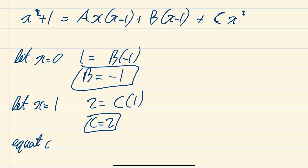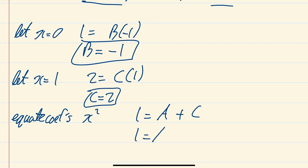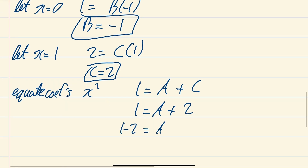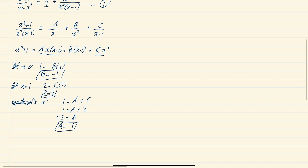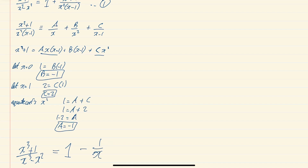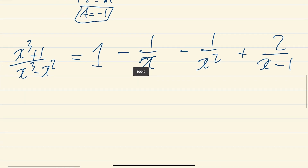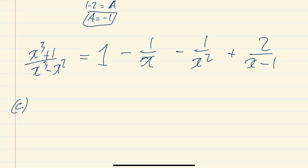For the last unknown, equate the coefficients of x². On the right-hand side, expanding gives A·x² and C·x², so 1 = A+C. Since C=2, we get A = −1. So the full expression — equation one — becomes: (x³+1)÷(x³−x²) = 1 − 1/x − 1/x² + 2/(x−1).